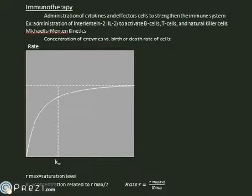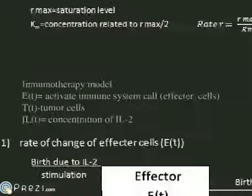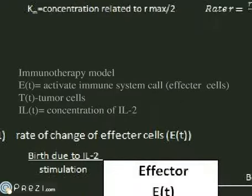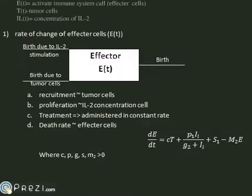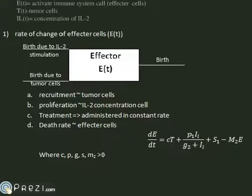The dotted line above the limit function is Rmax, the saturated level, where we see the progression of the immune response. These are elements in our immunotherapy model. The rate of change of effector cells is initiated by birth due to interleukin stimulation and birth by the tumor existing. These ultimately lead to the birth of effector cells onto the tumor.